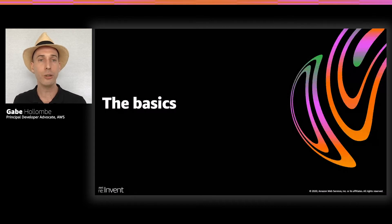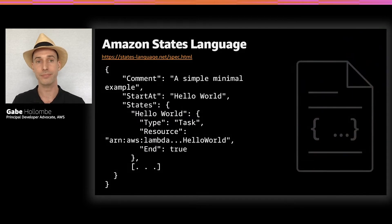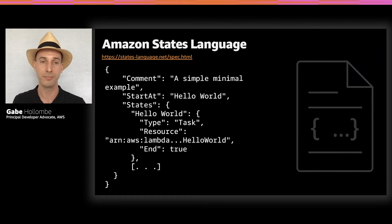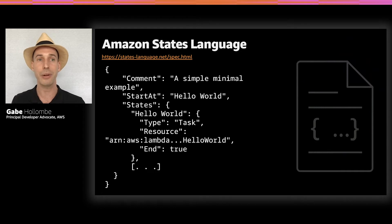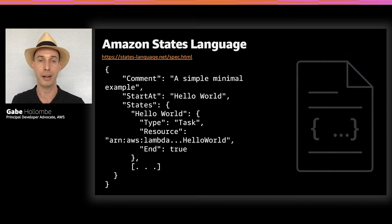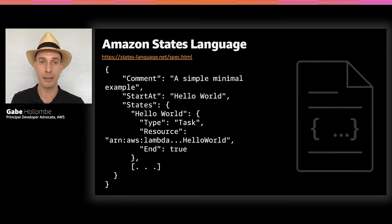That's what it looks like to use Step Functions. Now from a code perspective — what are the moving parts and concepts you need to understand? You define your state machines in something called the Amazon States Language, or ASL. This is a JSON-based language where you pass all the parameters needed to define a state machine. You have a start-at name, a states property containing all the different states you define, and each state has a type and appropriate parameters to describe the work for that type — whether it's a state that does work or a state that makes choices about inputs and outputs.